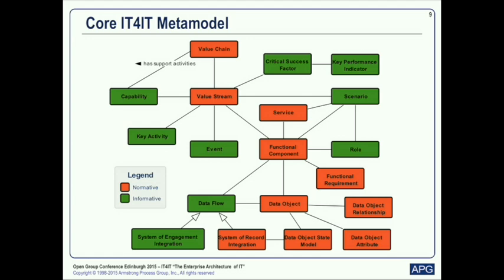Here we have a very high-level conceptual model of the core IT for IT meta-model: the value chain composed of value streams, those mapping to functional components that may expose services. Functional requirements from the normative specification map down to data objects and their relationships. There's also a state model associated with systems of record integration. Informative content in the standard includes capabilities, key activities, events related to value streams, critical success factors, KPIs, scenarios, roles, and a generic data flow incorporating both systems of record and systems of engagement.